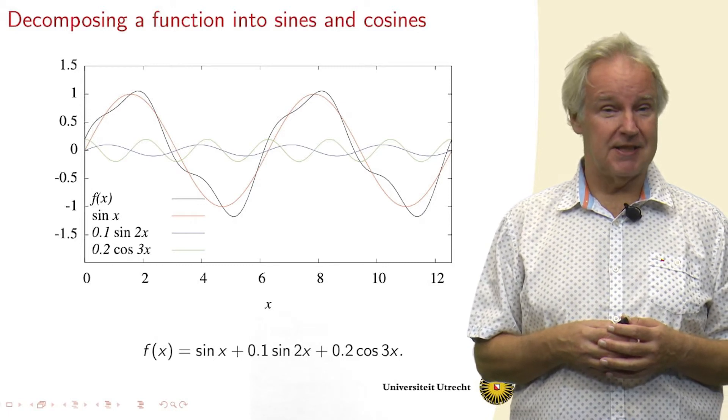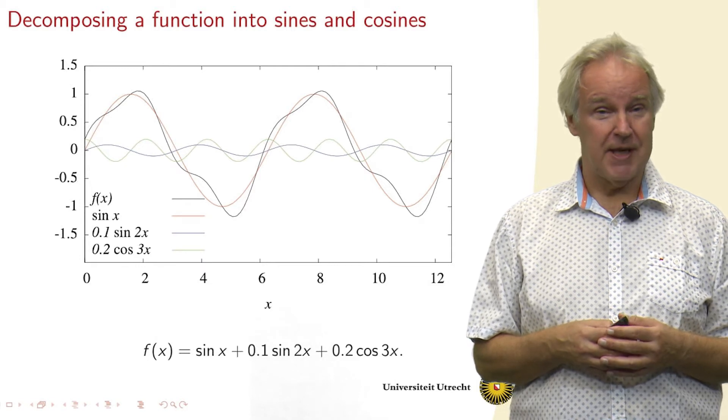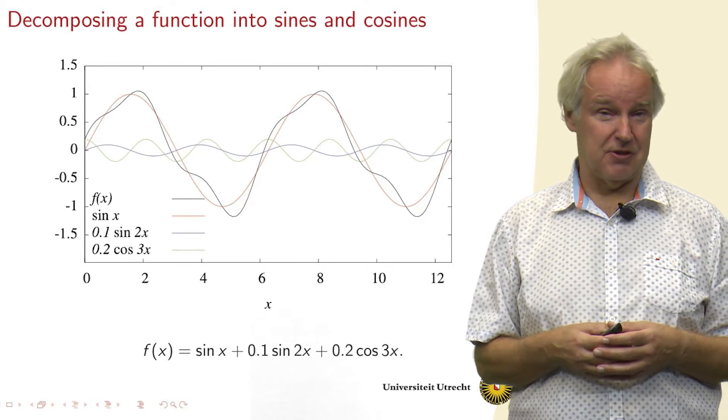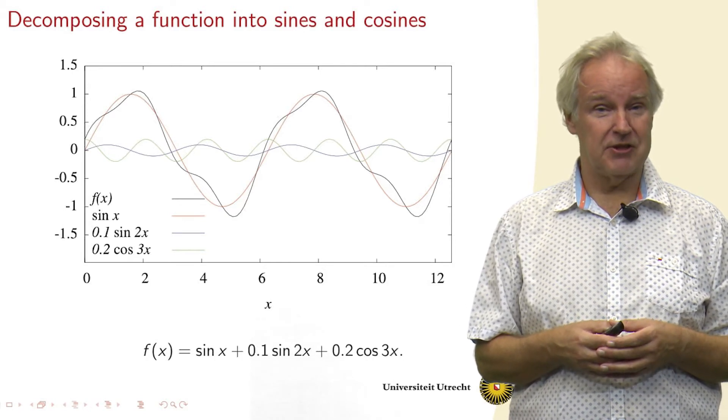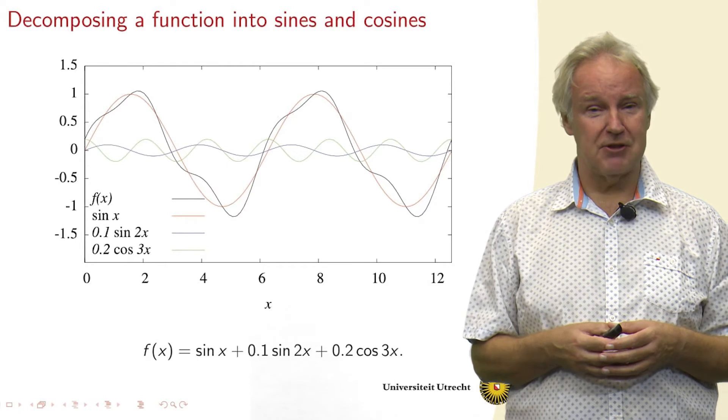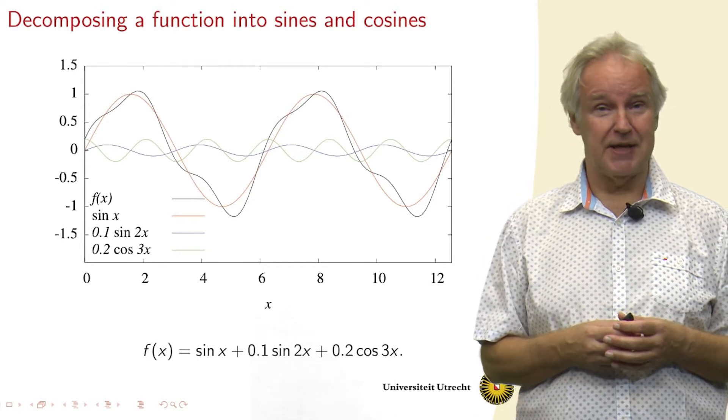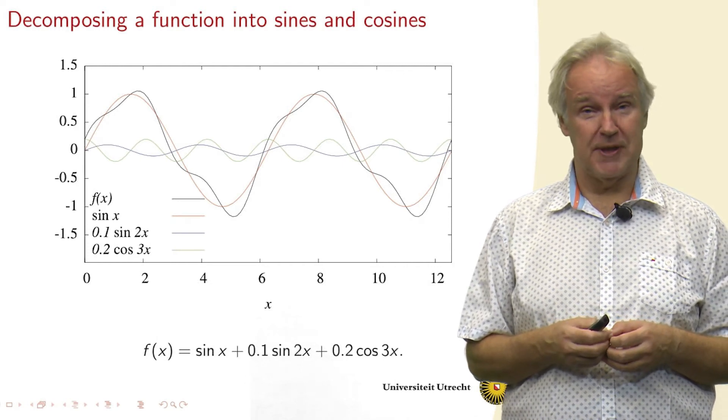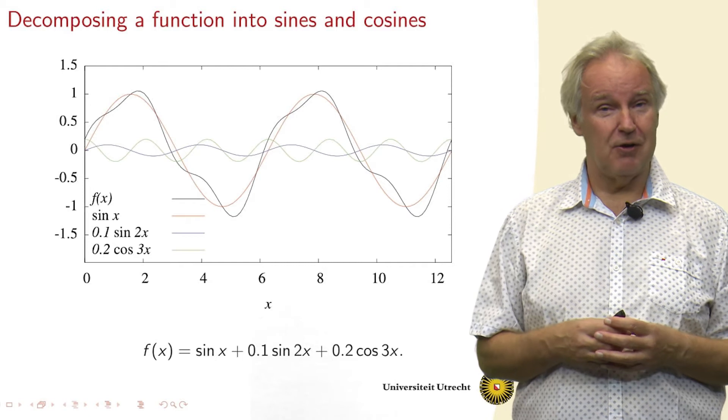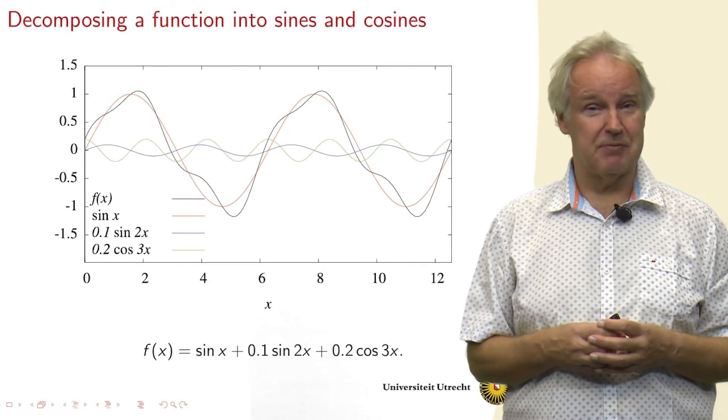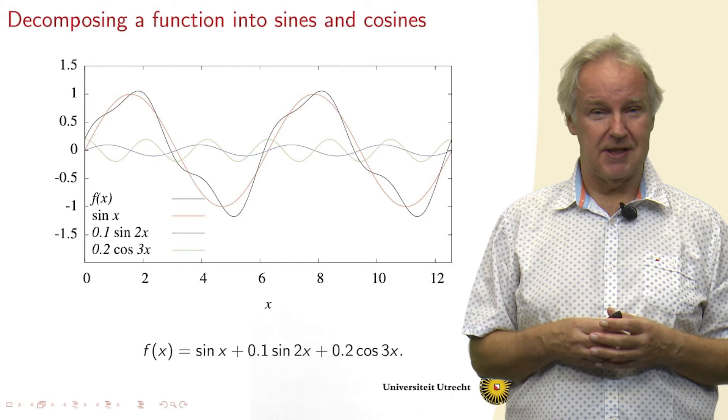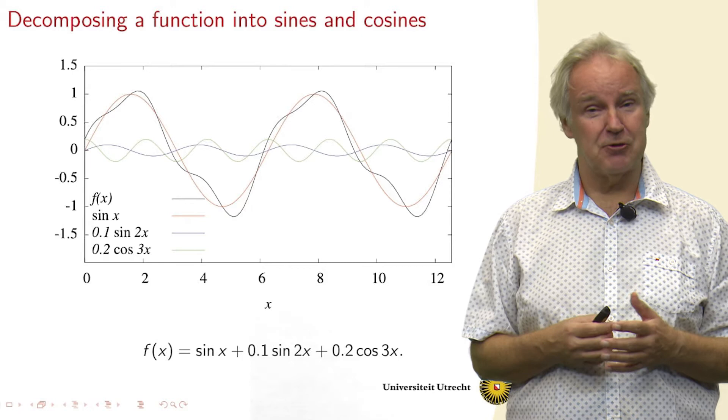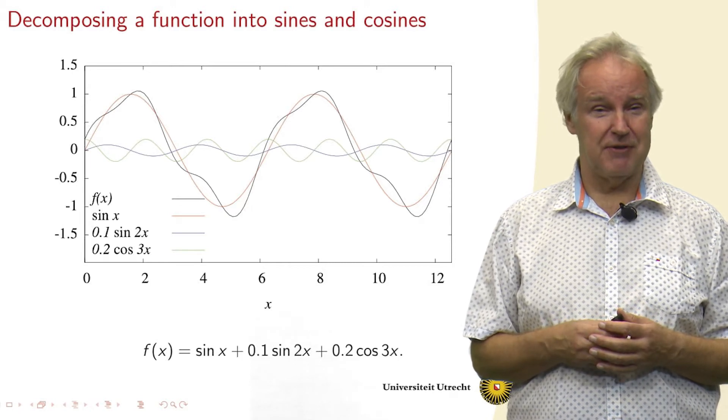And here we see that the function, the black function, is composed of three terms. The major term is the sine, the sine of x. But there's also a 10% contribution of a sine with twice the frequency. And also a 20% contribution of a cosine with three times the frequency. So it wiggles three times as often as the basic sine. Also this cosine is shifted a little bit.